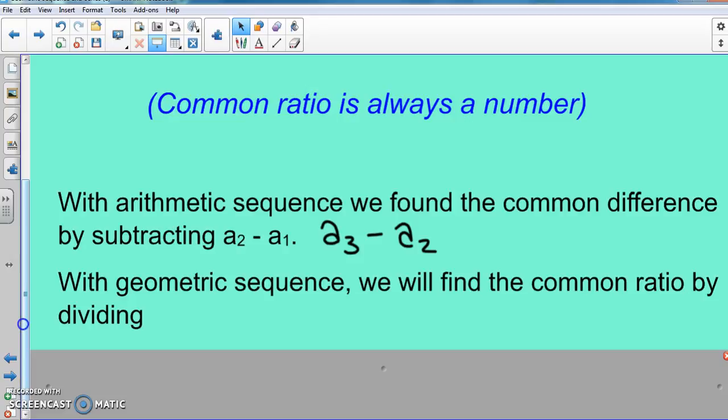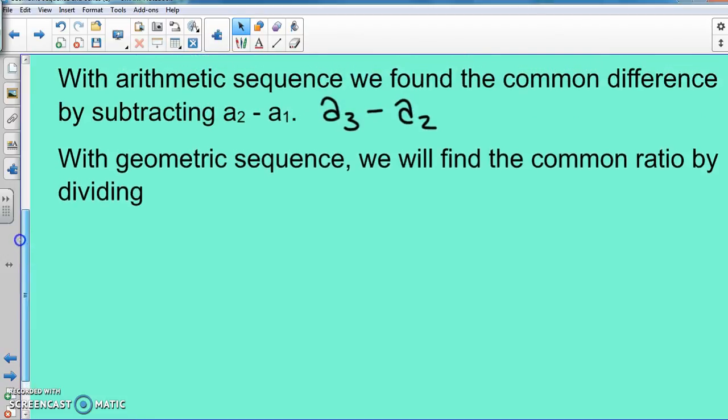And again, if you can actually look at it and figure out what the common ratio is, then you don't have to do so much work. That's fine, you don't have to find this, as long as you can look at it and tell. So to find our common ratio, originally we did A_2 minus A_1. When it comes to our geometric sequence, we're going to do A_2 divided by A_1.